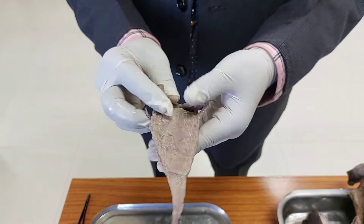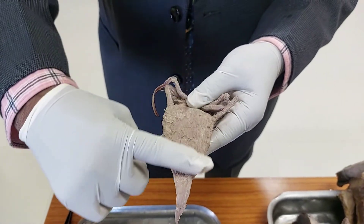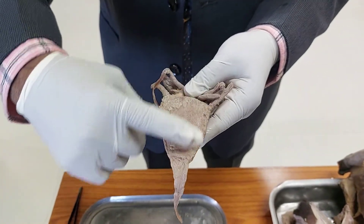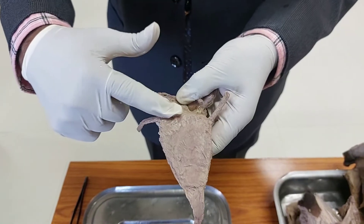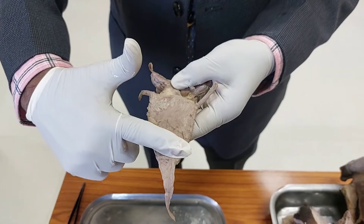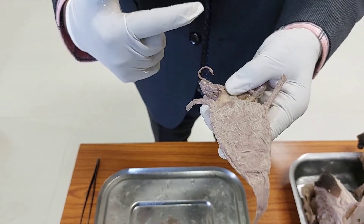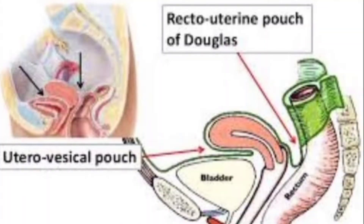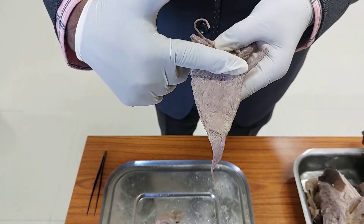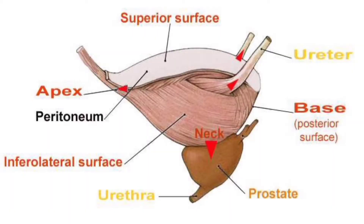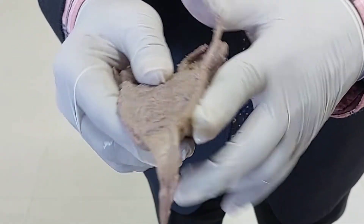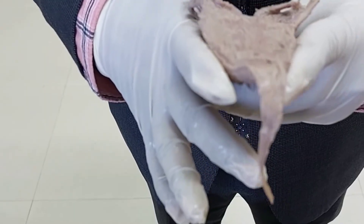Regarding the peritoneal relations of the urinary bladder: the peritoneum covers the superior surface of the urinary bladder. In males, it extends onto the upper part of the posterior surface. In females, the peritoneum covers the superior surface and then is reflected onto the uterus, forming the uterovesical pouch. The inferolateral surfaces on both sides are non-peritoneal and are not covered by peritoneum.